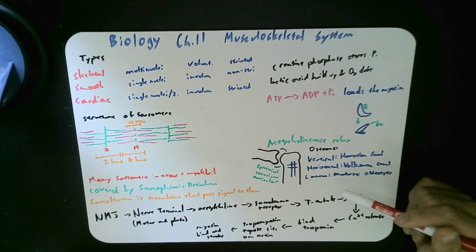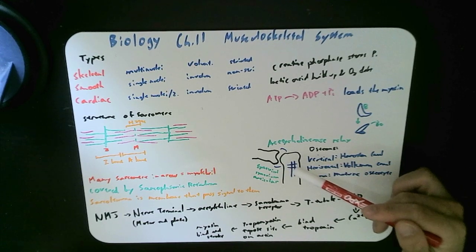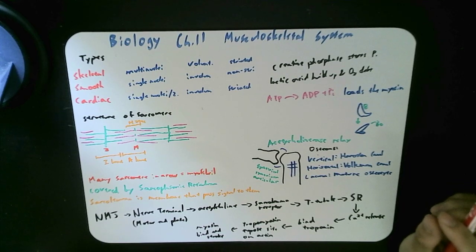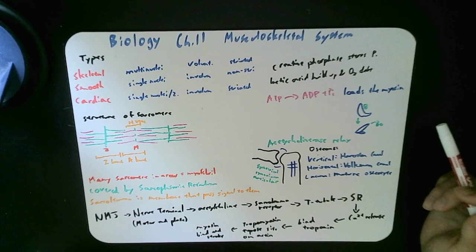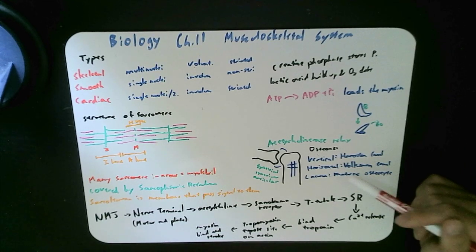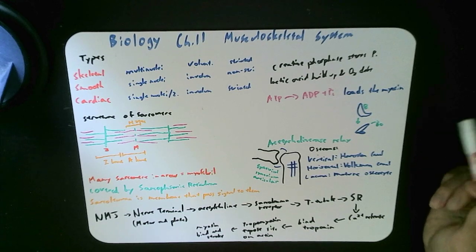We also have the lacunae, which is the actual structure in between. They're a little bit dispersed, but just far enough apart that they contribute to their structural integrity and their mature osteocyte, which is like the bone cells.